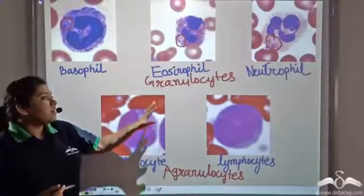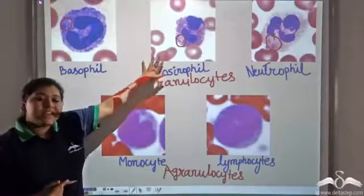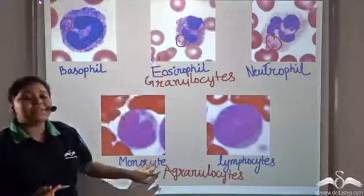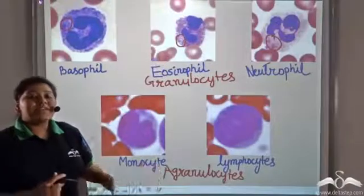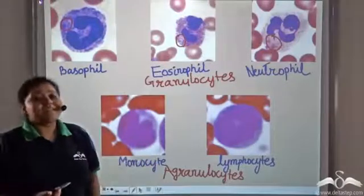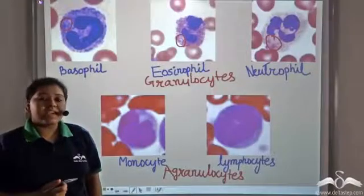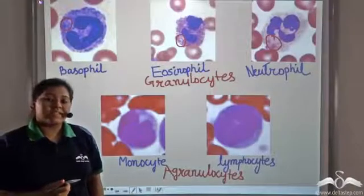So there are granulocytes and agranulocytes, which together form all the white blood cells present in our body.